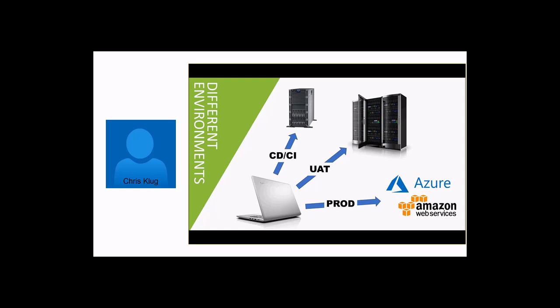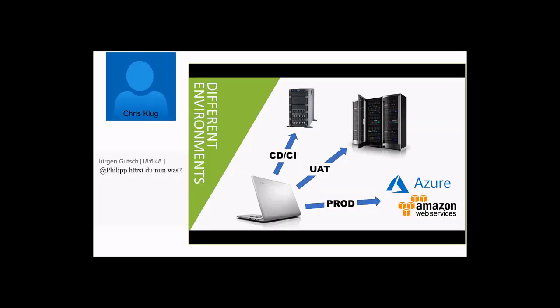We sit down, build our software, and commit it into Git or whatever we do. Then we probably have some continuous integration build that runs on one server. Then we push that to a user acceptance test environment, which is another environment. Once approved, it gets pushed to a production environment — yet another environment, possibly even a cloud provider. All these different environments mean small or even large differences, which makes deploying software hard.